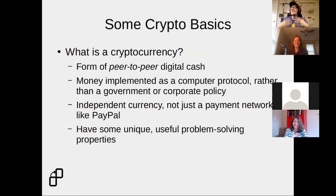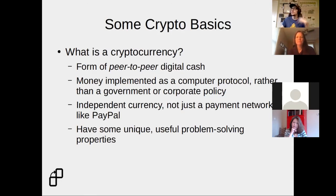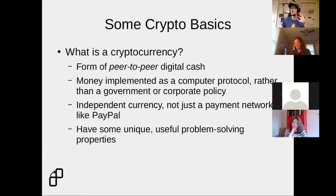So what is a cryptocurrency? Cryptocurrency is a form of peer-to-peer digital cash. It's money implemented as a computer protocol rather than a government or corporate policy like what we're used to. So it's an independent currency and not just a payment network tied to the U.S. dollar like PayPal. And it has some unique and useful problem-solving properties.